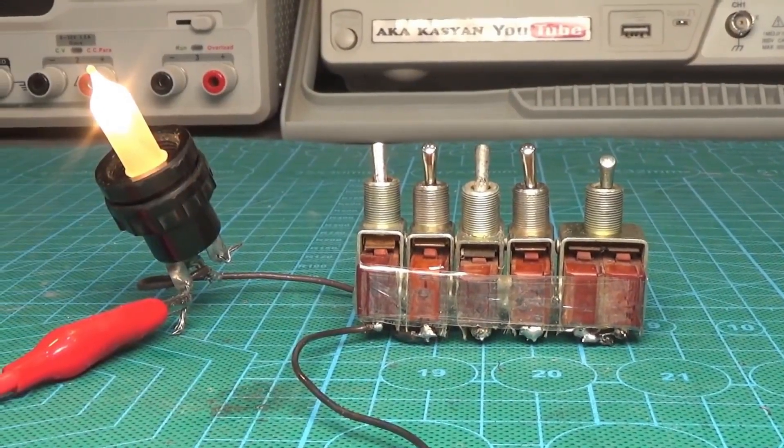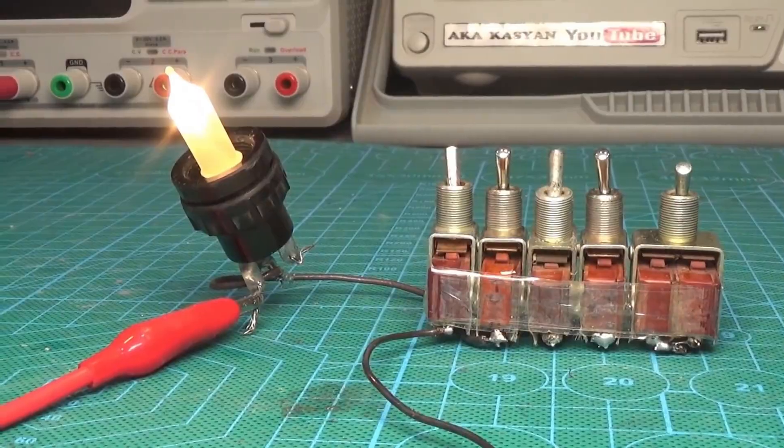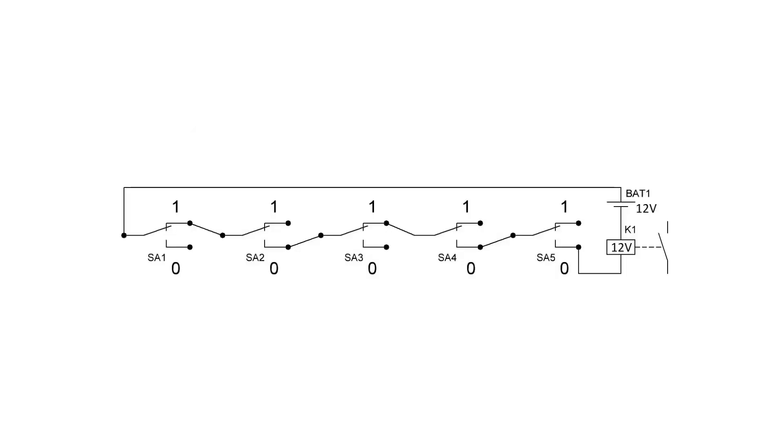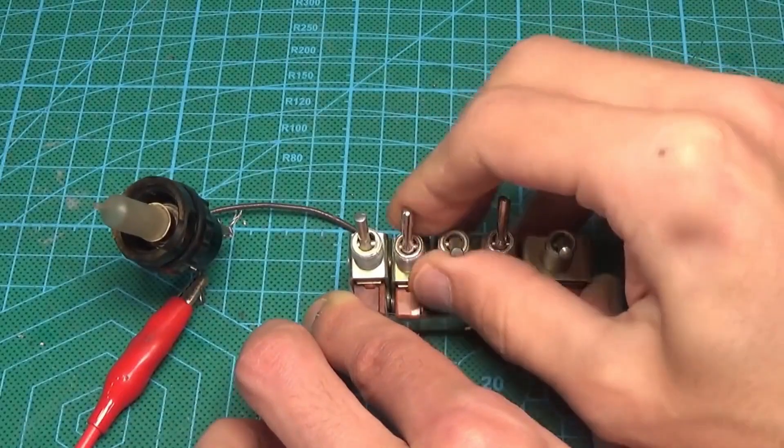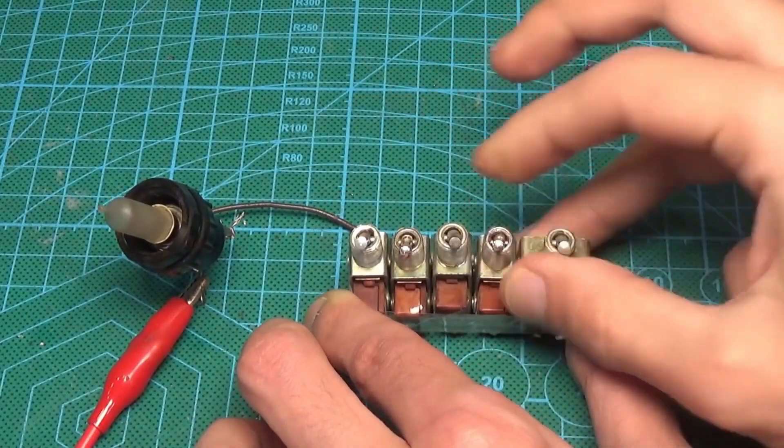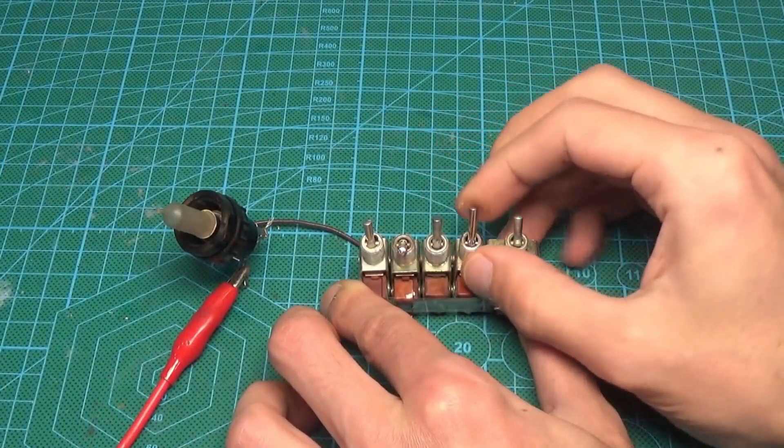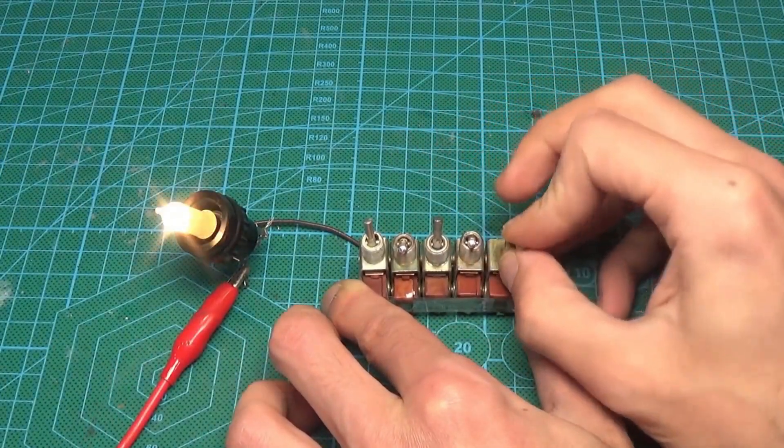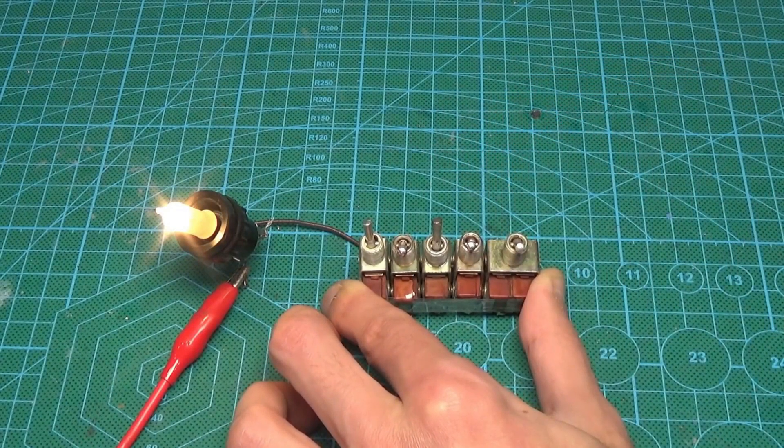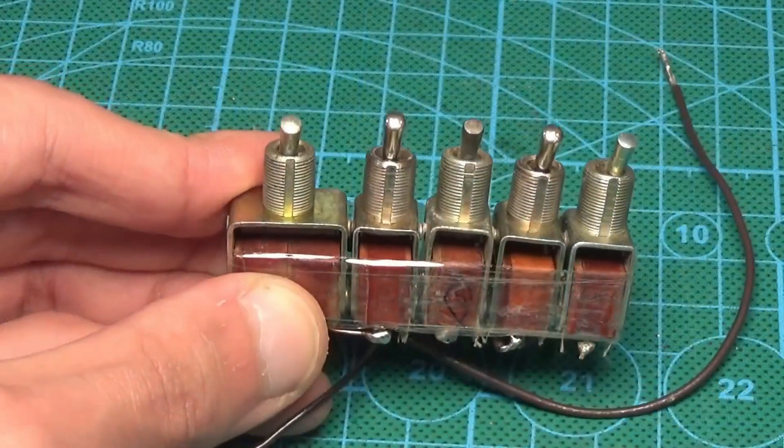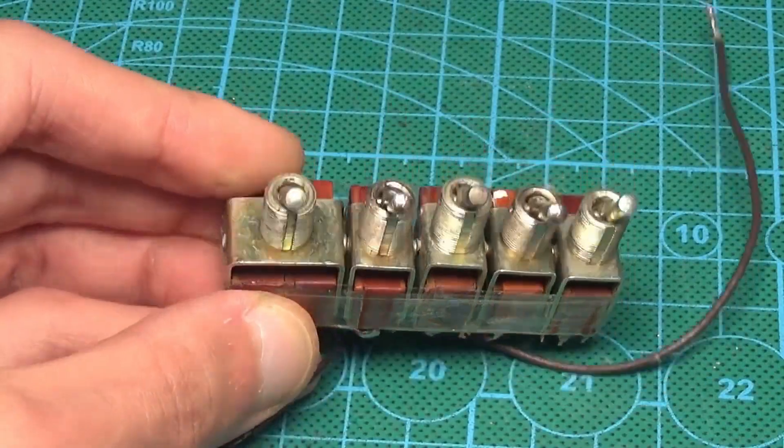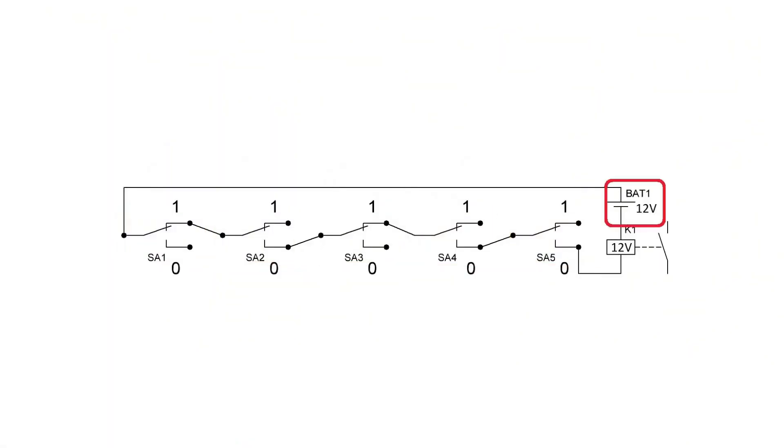Before you is the simplest code lock that can possibly exist. It is electromechanical and, despite its simplicity, has many advantages. Firstly, it does not consume any current from the power source in standby mode. Secondly, the code can be made as complex as desired by adding more switches to the circuit. Yes, this lock is based solely on switches, but it also includes a power source with a switching relay.